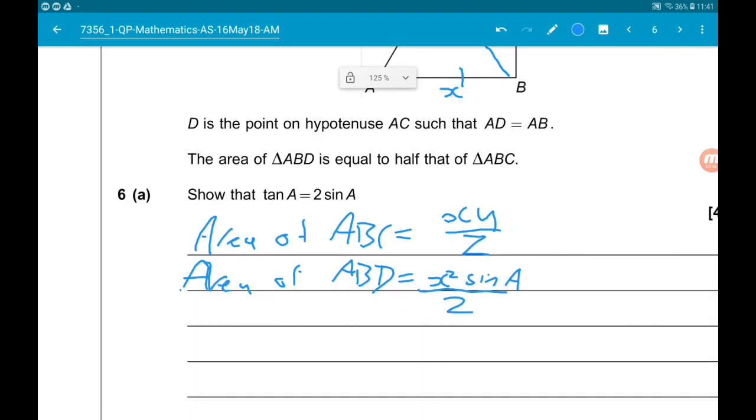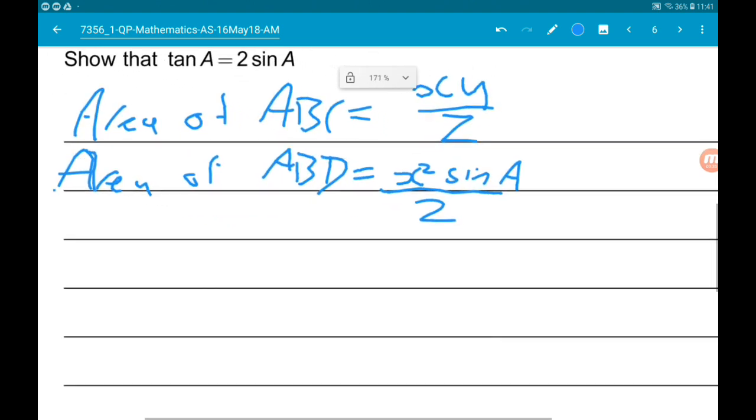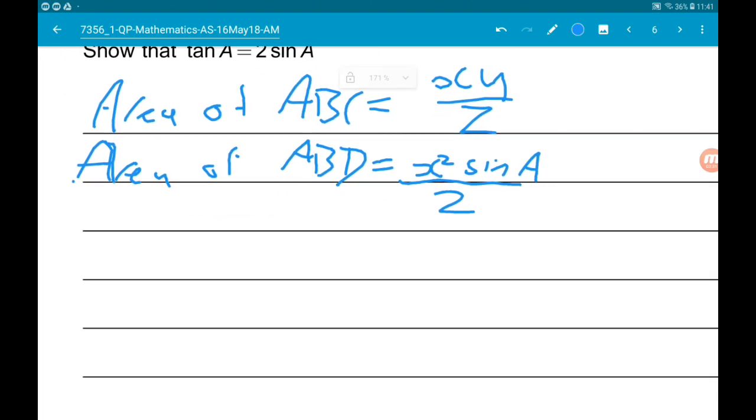Now, we know that the area of ABD is half the area of the whole triangle. So from that, we can say X squared sine A over 2 is one half of XY over 2.